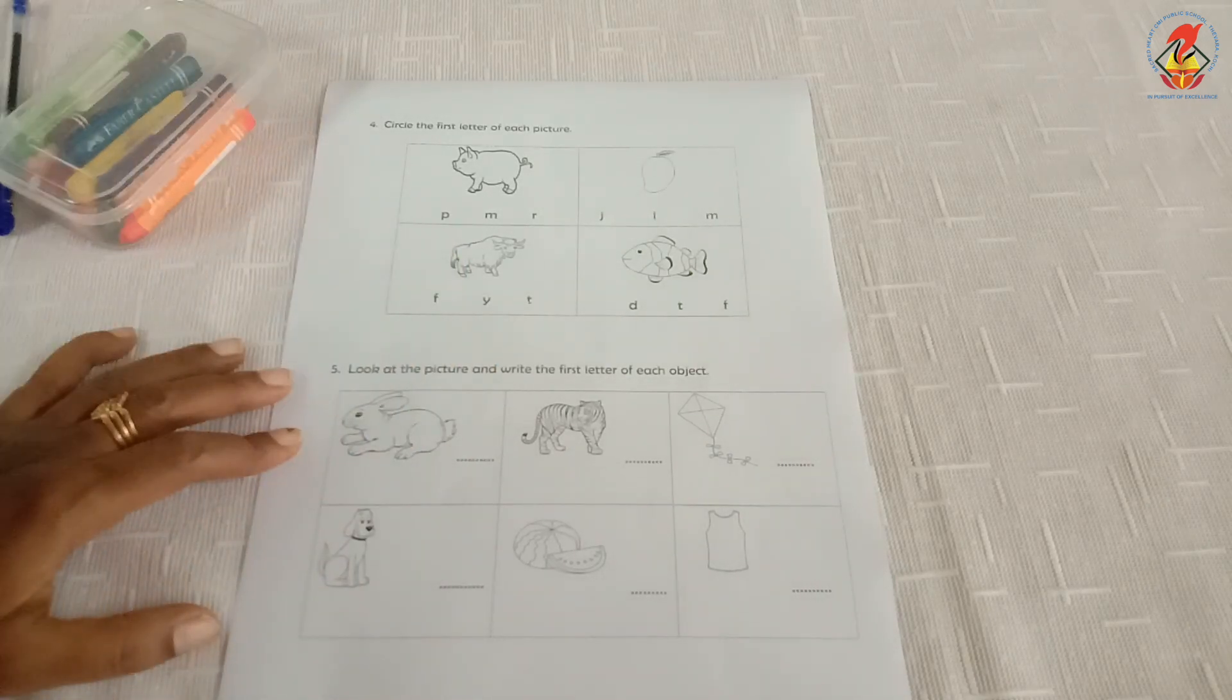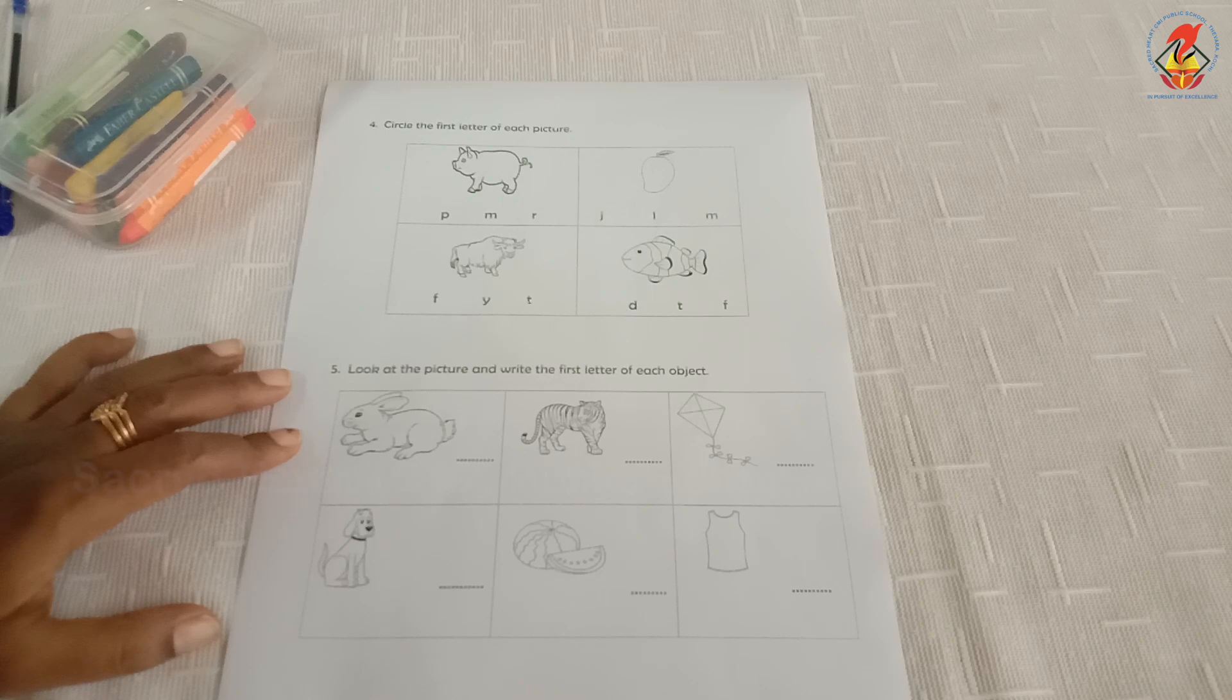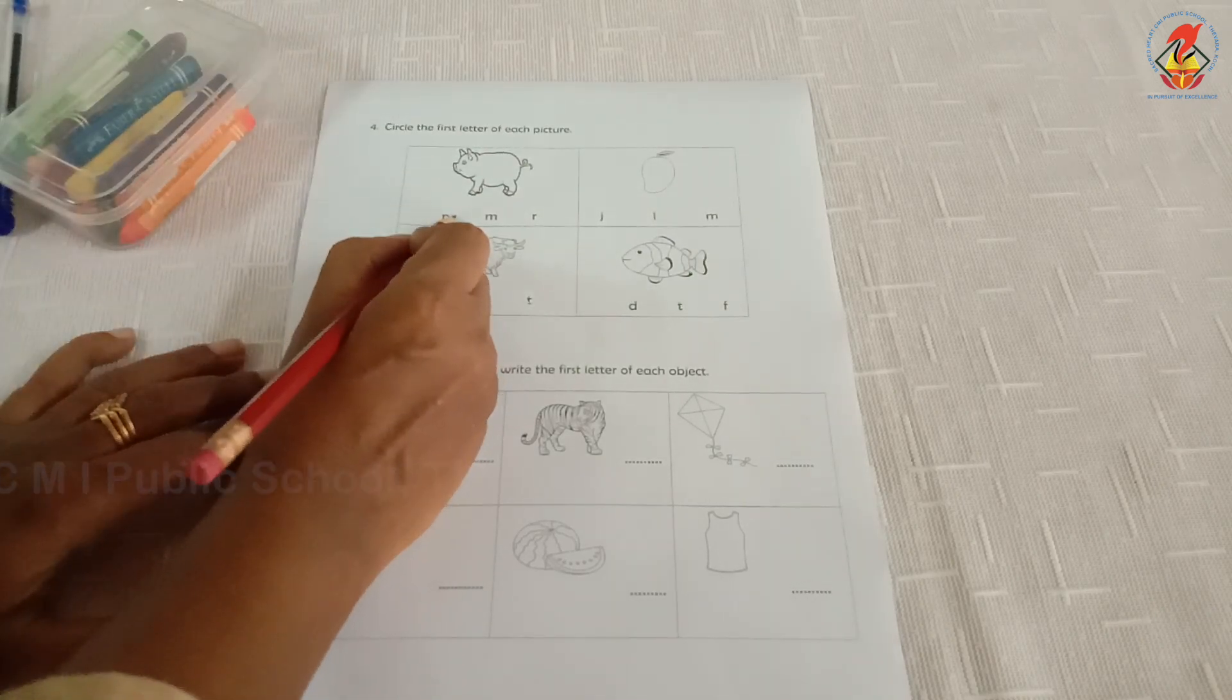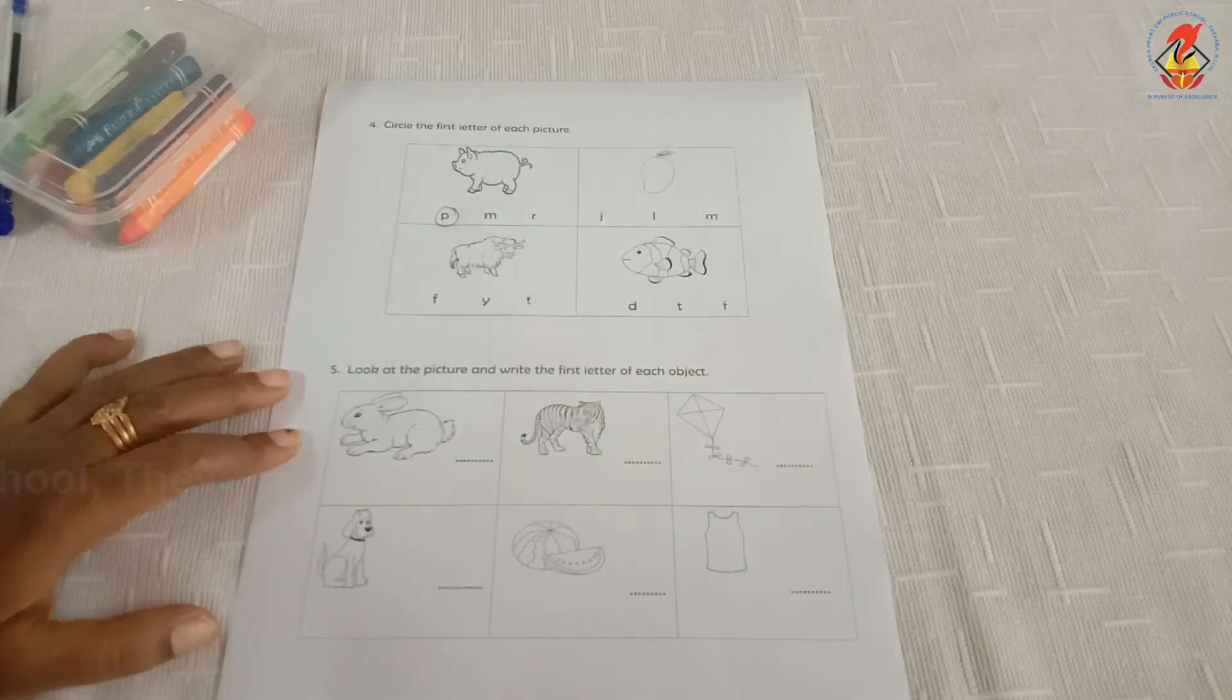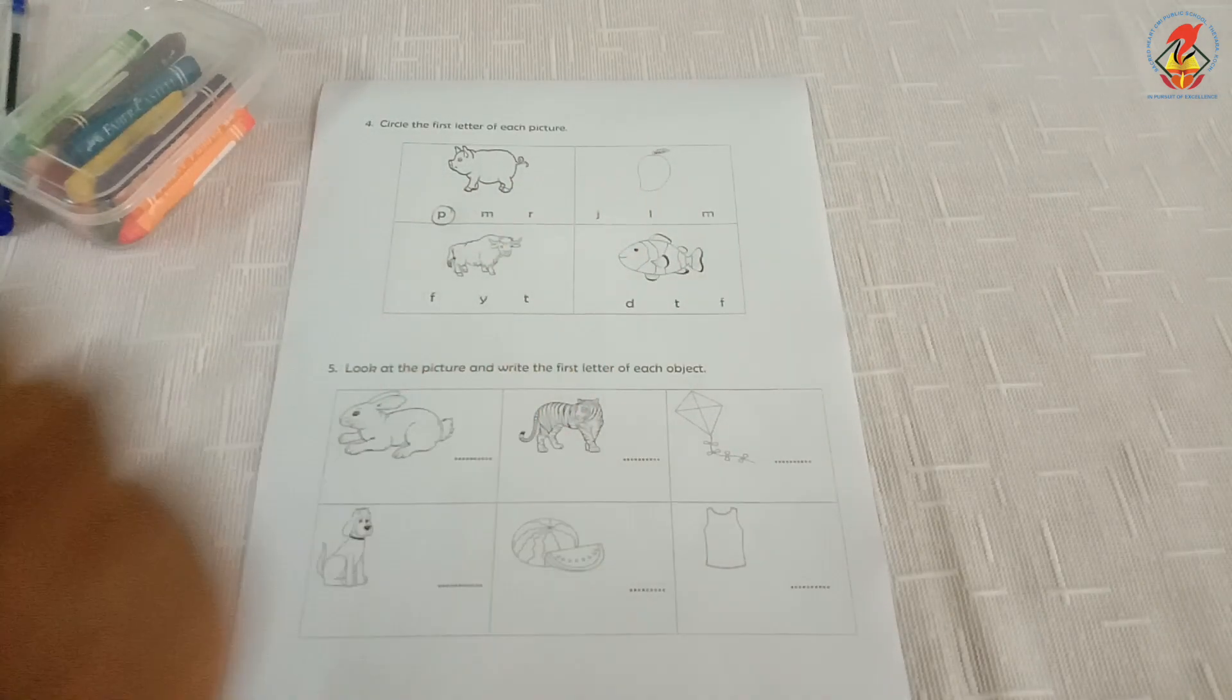So, where is the letter? Which letter makes the P sound? Letter P. Letter P makes the sound P. So, P pig. You have to circle letter P only. Other questions also you have to do like that.